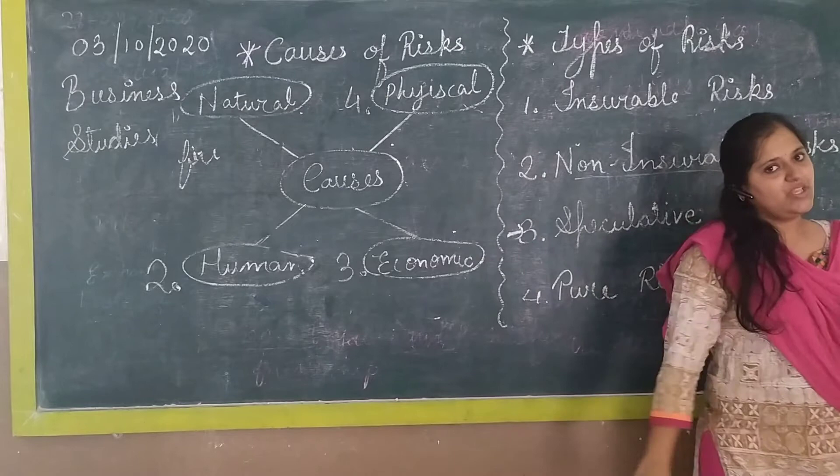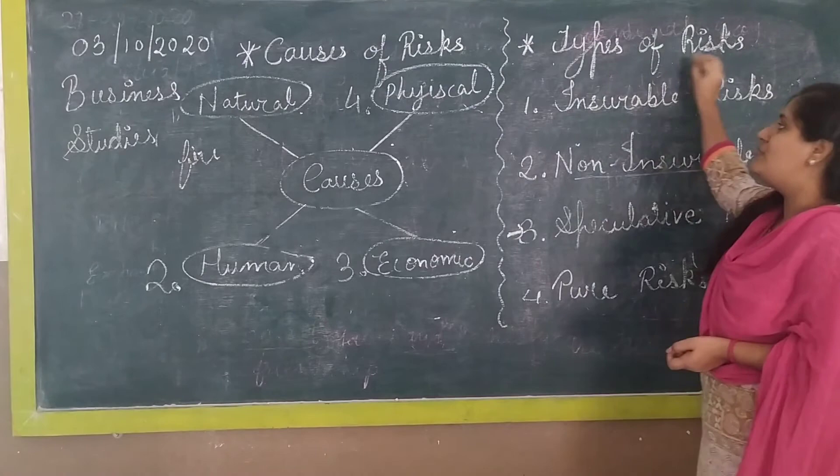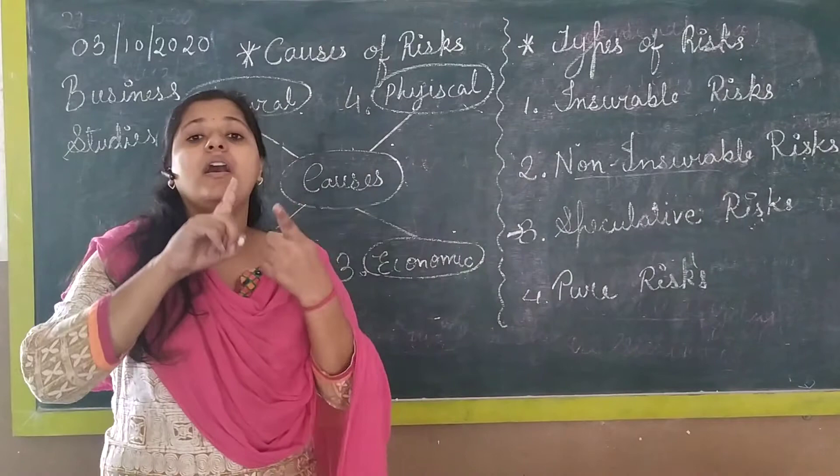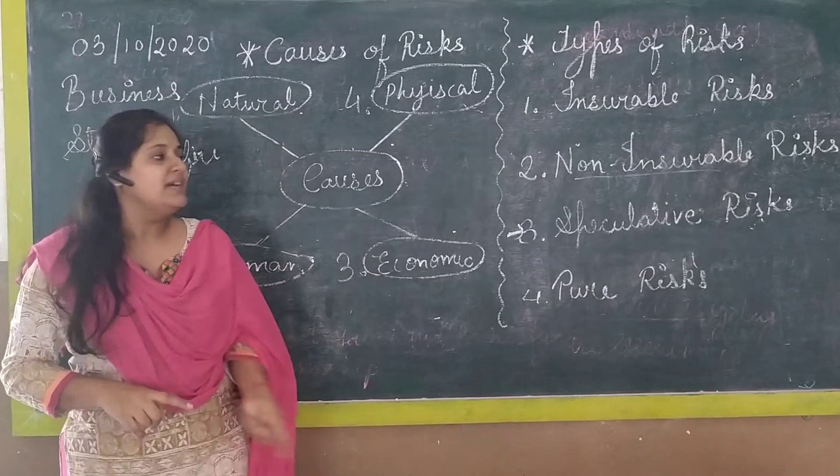Now the last part of this topic — business risk — is the types of business risk. There are basically four types: insurable risk, non-insurable risk, speculative risk, and pure risk.